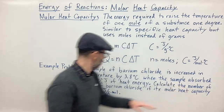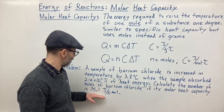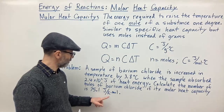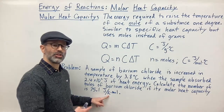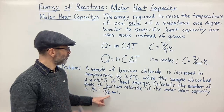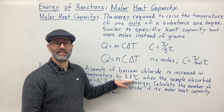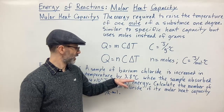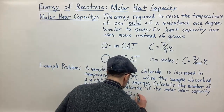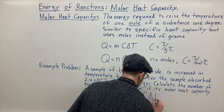We need to calculate the number of moles of barium chloride if its molar heat capacity is 75.1 joules per Kelvin per mole. Notice we have Kelvin here, so we want to make sure we're multiplying by a change in temperature in Kelvin — but a change in degrees Celsius is the same as the change in Kelvin. So we can use our equation: Q equals N times molar heat capacity times the change in temperature.